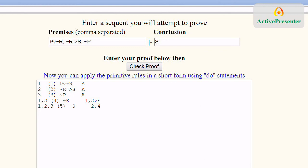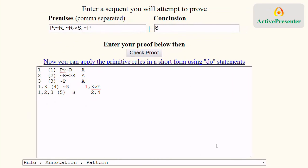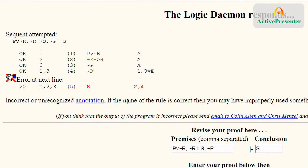So you do all that, then you hit check proof. I made a mistake. So it shows me these lines, the first four are all okay. But in the last line, I've made a mistake, incorrect or unrecognized annotation.